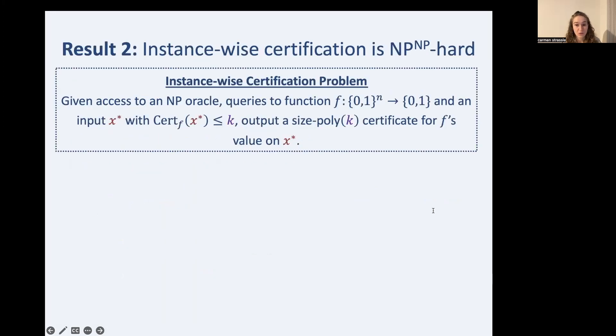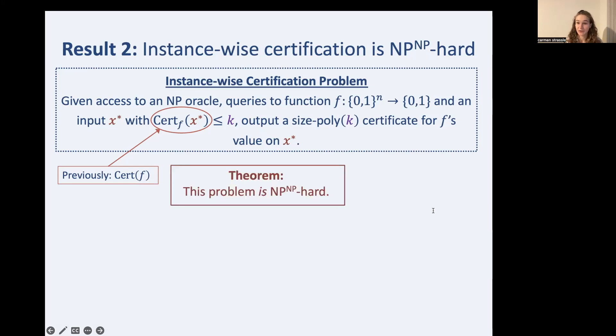Next, we provide a lower bound for instance-wise certification. So what is instance-wise certification? It's exactly the same as before, but we've replaced the certificate complexity with its instance-wise counterpart. Remember that cert sub F of X star is simply the length of the shortest certificate for X star. Before we were taking a maximum over all X, but here we just are considering our specific input X star. In contrast to the previous slide, this problem is NP to the NP hard. And that's the major result that we proved.